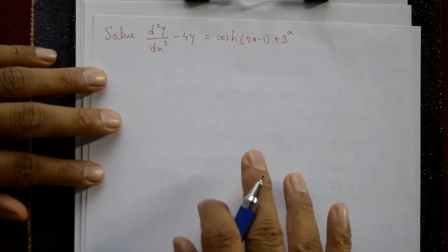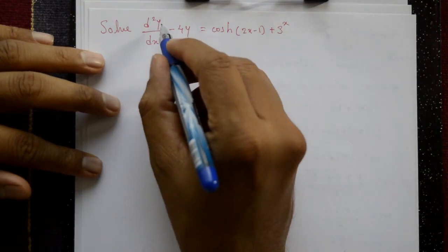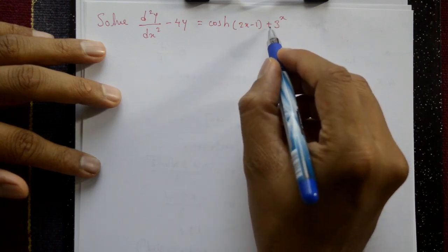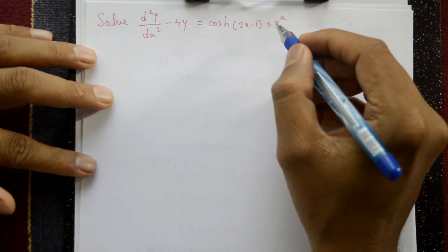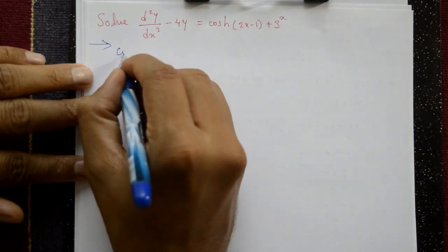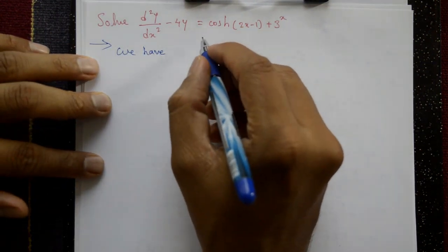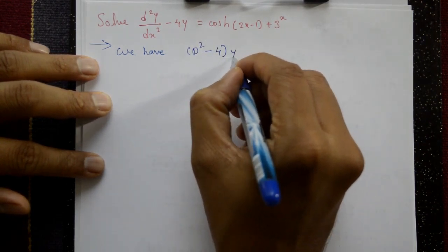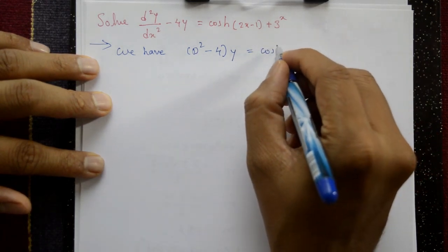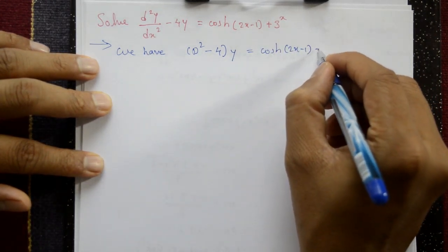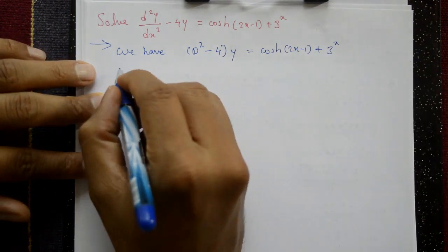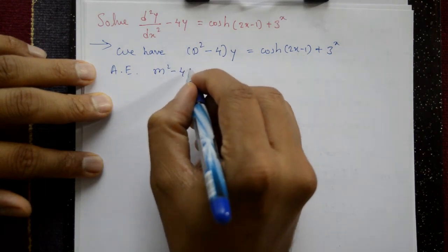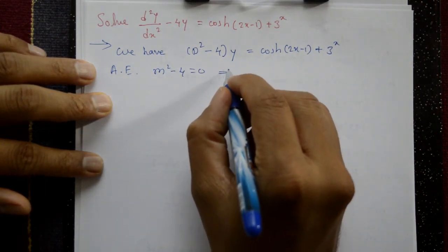Next example: Solve d²y/dx² - 4y = cosh(2x - 1) + e^(3x). We write this as (D² - 4)y = cosh(2x - 1) + e^(3x), where D = d/dx.